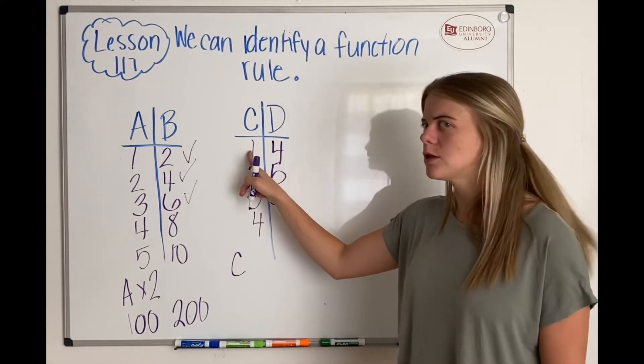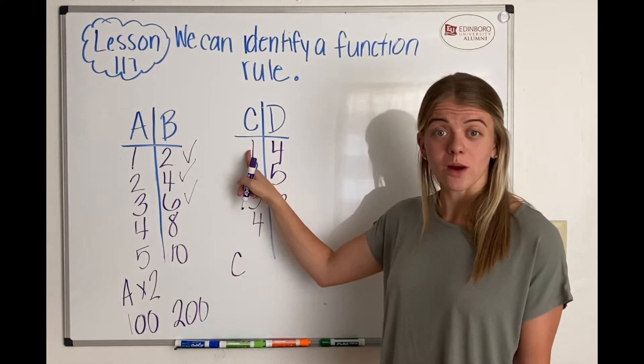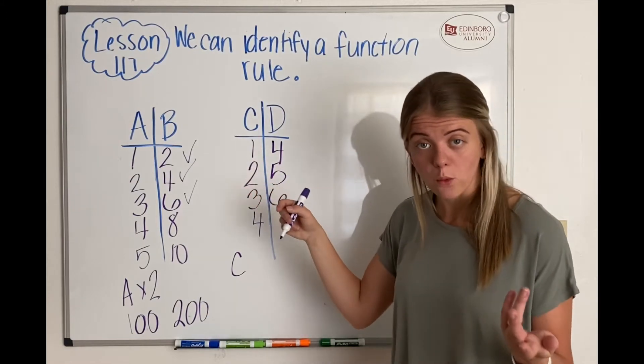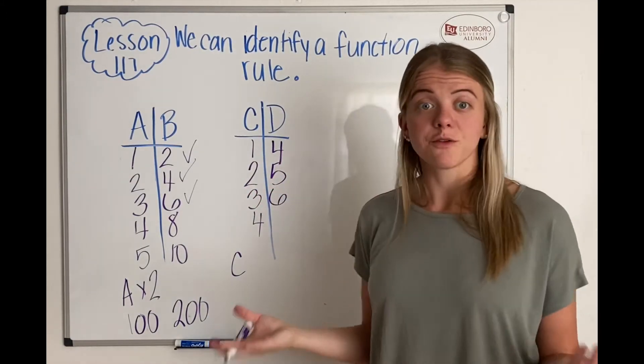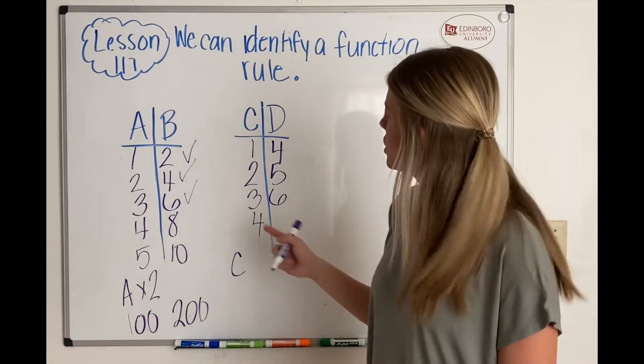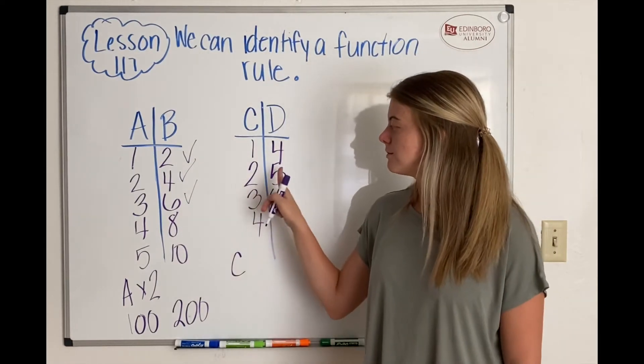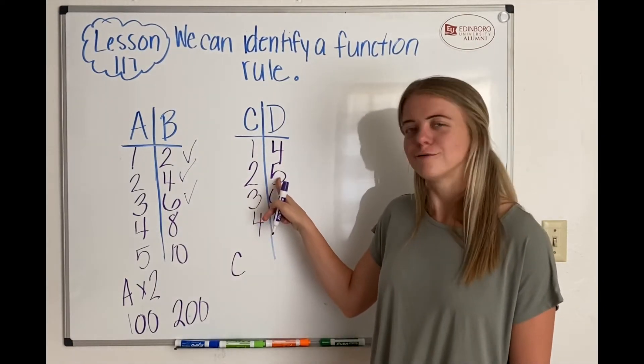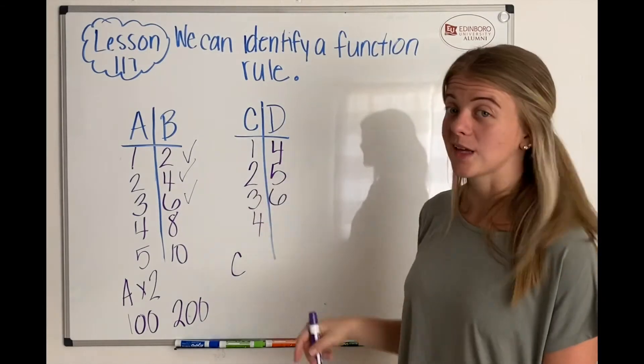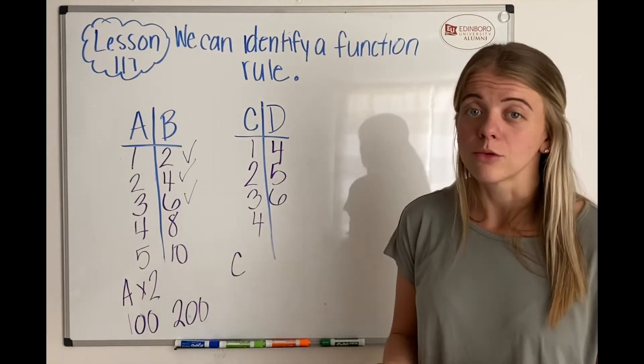Well, I can multiply 1 times 4. 1 times 4 equals 4. Let's see if times 4 works for the rest of these. 2 times 4. Does 2 times 4 equal 5? It doesn't, it equals 8. So times 4 would not be my rule.